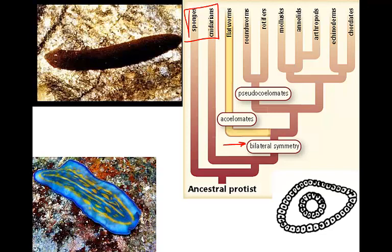The main difference between flatworms and roundworms is that flatworms are acelomates, meaning that they do not have a true coelom. Roundworms are pseudocelomates.